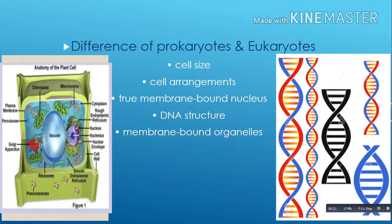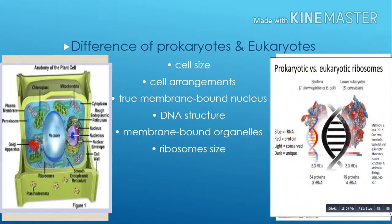Prokaryotes and eukaryotes also differ in their ribosome sizes. Both eukaryotic and prokaryotic cells contain many ribosomes; however, the ribosomes of eukaryotic cells are larger than prokaryotic ribosomes. Eukaryotic ribosomes also show more complexity, being constructed of five kinds of ribosomal RNA and about 80 kinds of proteins. In contrast, prokaryotic ribosomes are composed of only three kinds of RNA and about 50 kinds of protein.